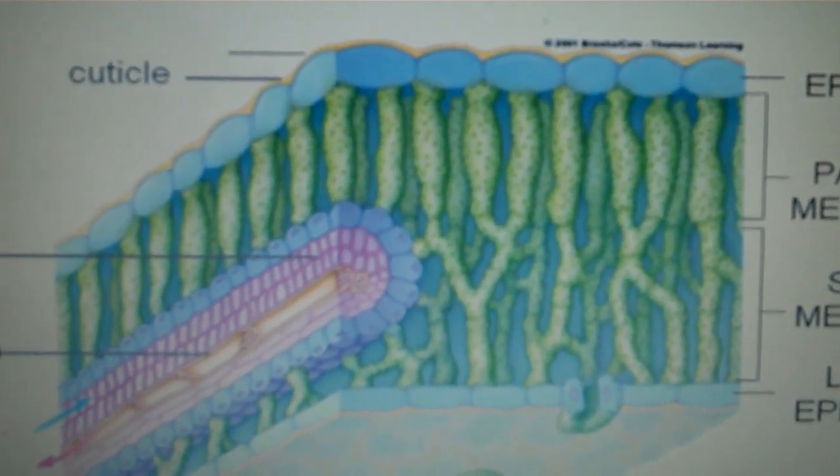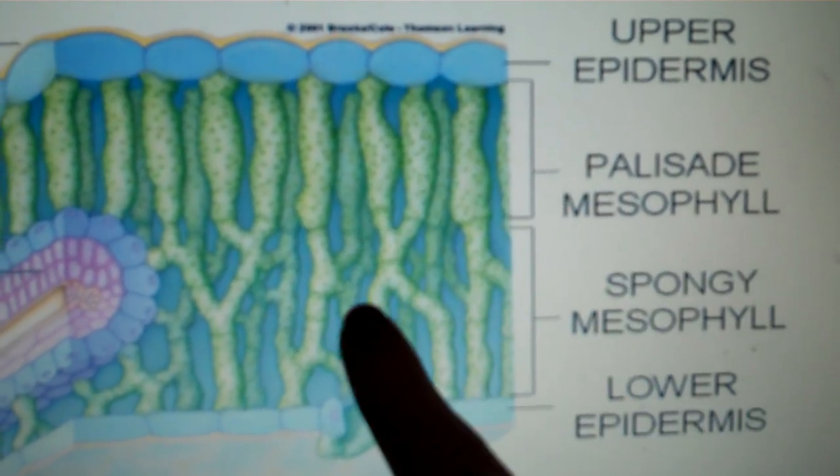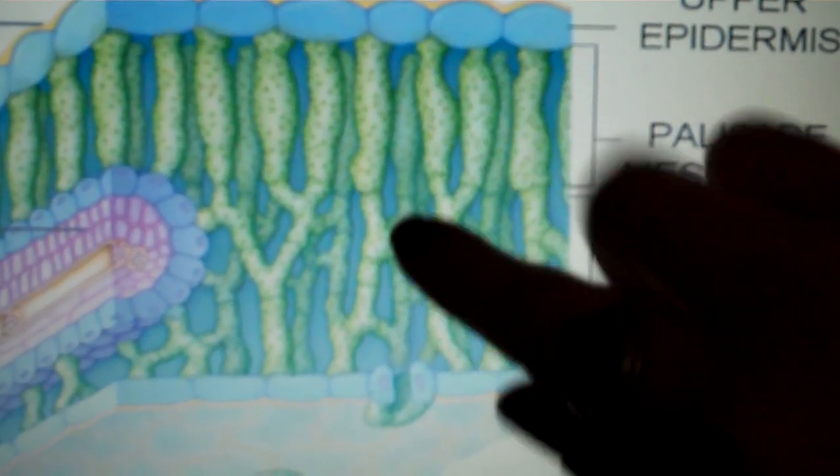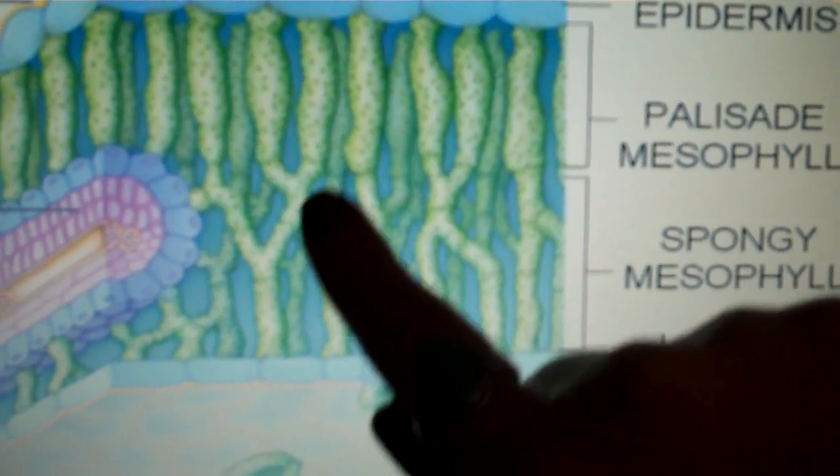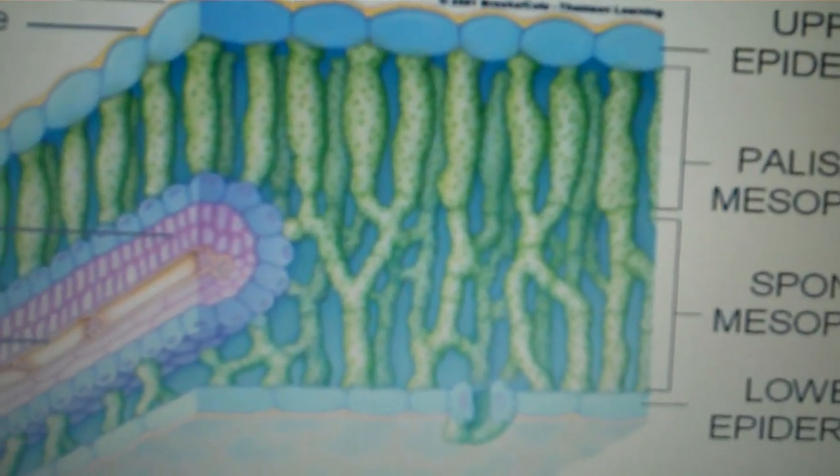We have the ground tissue, which is made up of the palisade mesophyll and the spongy mesophyll. This is where photosynthesis is going to occur. You can see there's a lot of space in between the mesophyll and that's for carbon dioxide and oxygen.